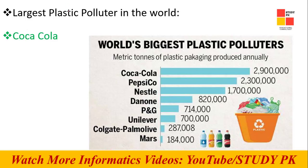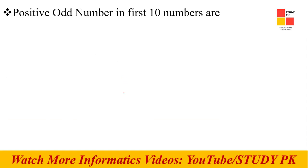Next question: the largest plastic producer in the world — the right answer is Coca-Cola. Coca-Cola is the largest plastic producer in the world; number one is Coca-Cola, followed by Pepsi and then Nestlé. Next: the positive odd numbers in the first ten numbers are one, three, five, seven, and nine — that is the right answer.